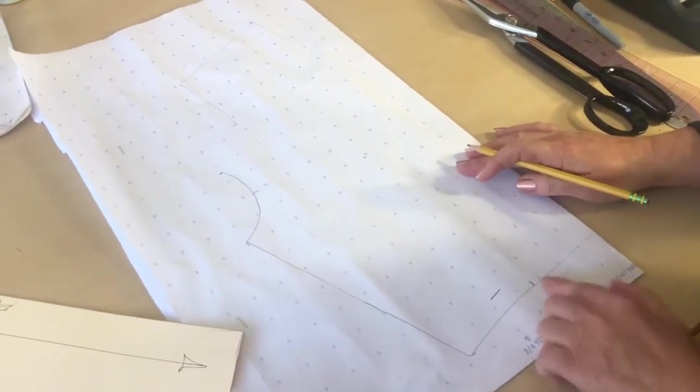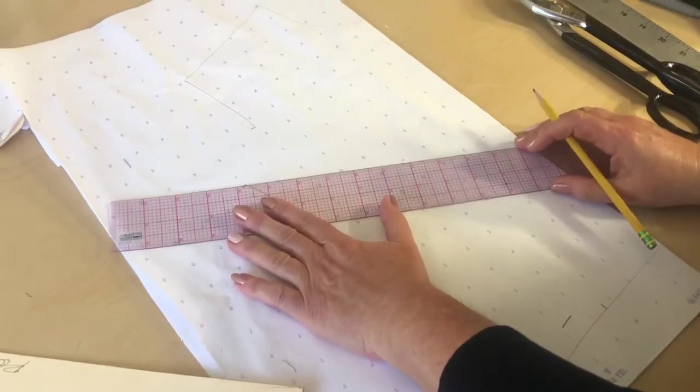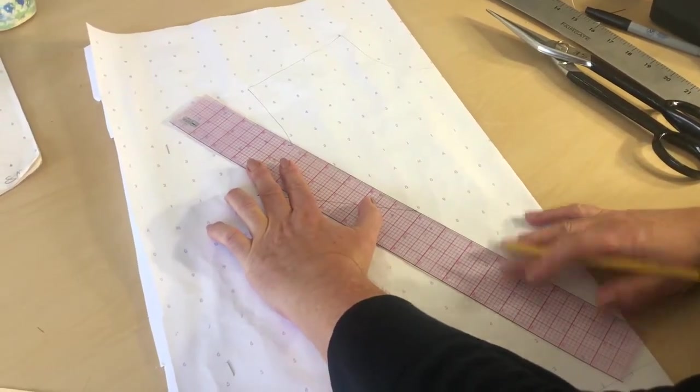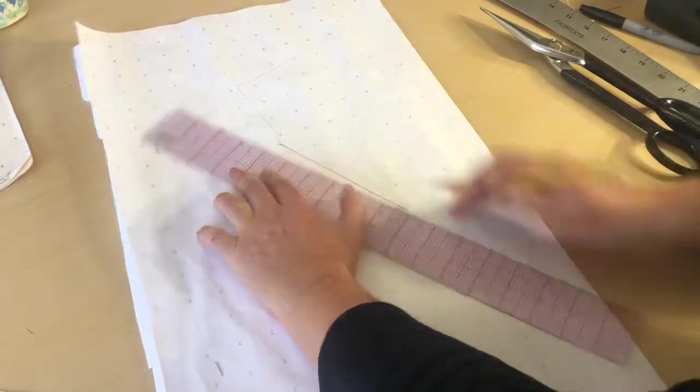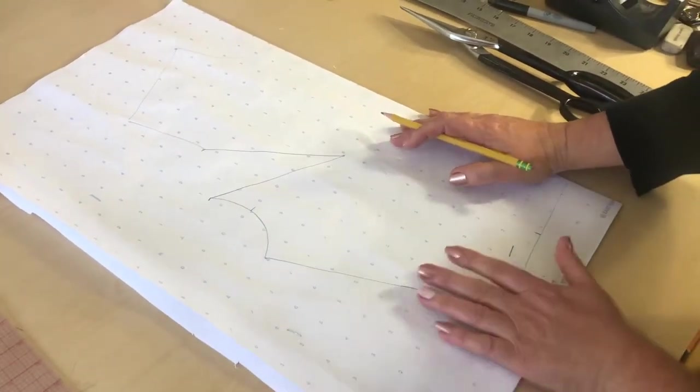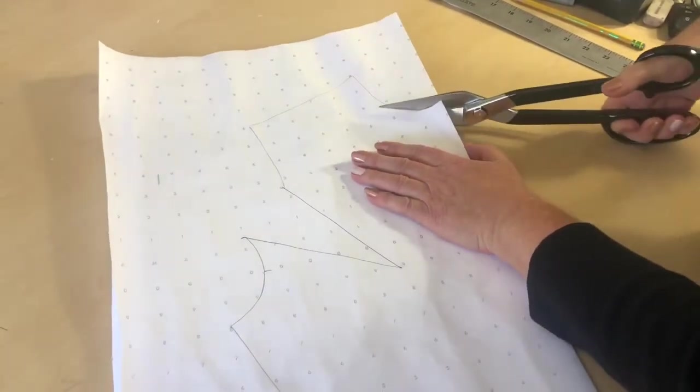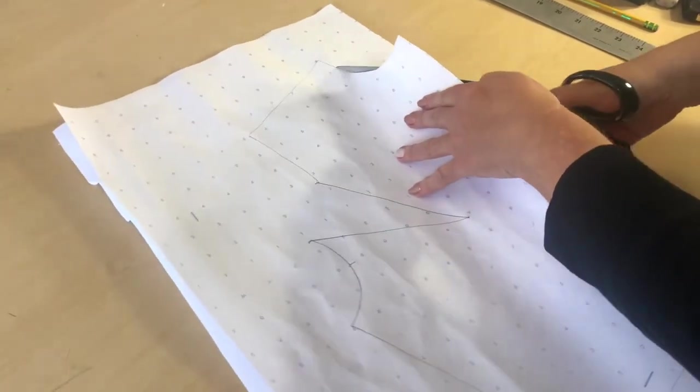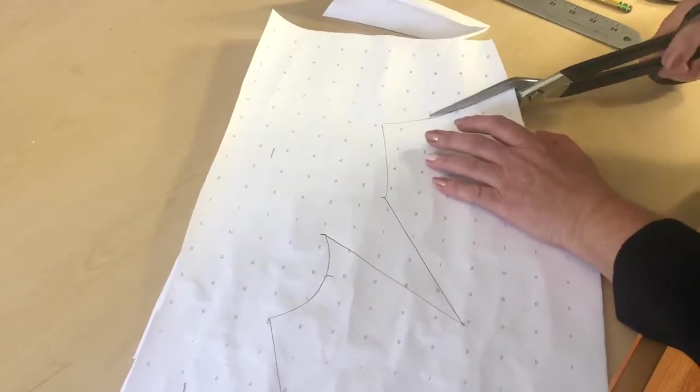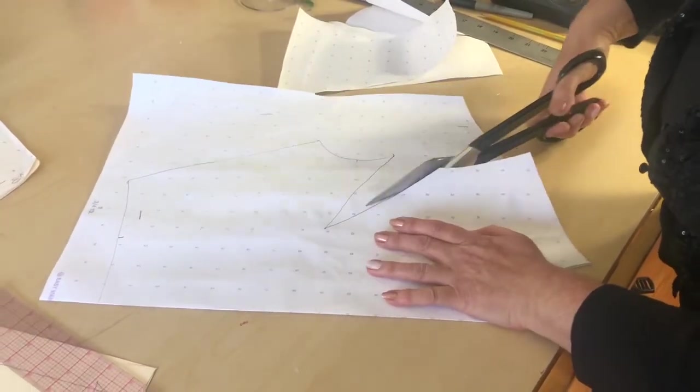You see the waistline dart is closed and the armhole dart has opened. We're going to connect the legs of this dart to the apex and we can see that the dart is there. The next step is cutting this pattern off of the dotted paper without adding any seam allowances because we're not done yet. We still need to develop this pattern. I'm going to cut out my dart.